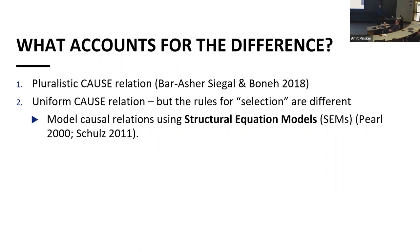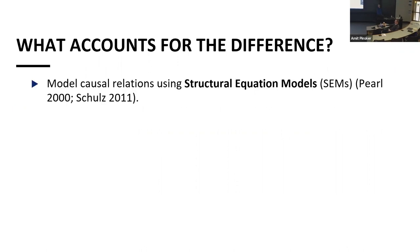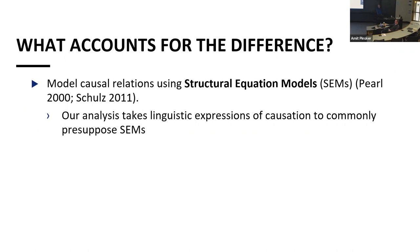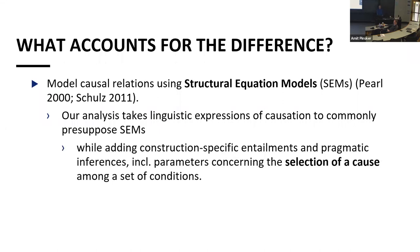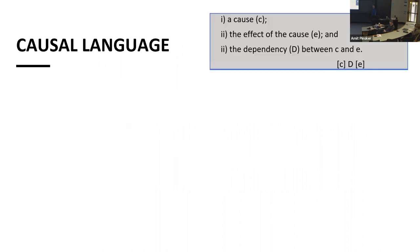The idea is that first I will suggest a way to model causal relations, and then show that each linguistic expression is sensitive to something different, which leads us — within the same notion of causality — to different meanings and different truth conditions for each expression. In order to follow this direction, I will suggest that most causal expressions commonly presuppose structural equation models, while adding construction-specific semantic and pragmatic inference parameters concerning the selection of the cause among the set of conditions.